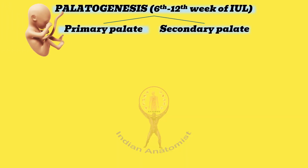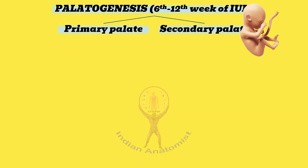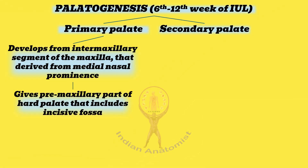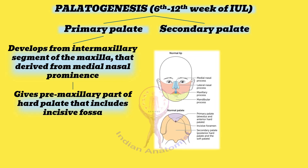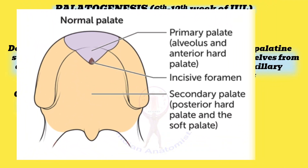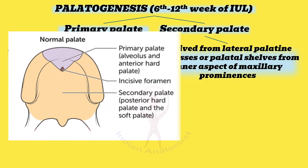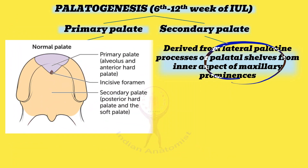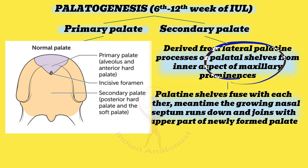Development of the hard palate begins in the sixth week and completes by the twelfth week of gestation. The palate develops from two primordia: the primary palate and the secondary palate. The primary palate develops from the intermaxillary segment, which forms the premaxillary part of the maxilla and includes the incisive fossa.